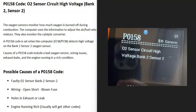Today I'm talking about a P0158 code, what it is and how you could go about fixing it. A P0158 code is an O2 sensor circuit high voltage bank 2 sensor 2.